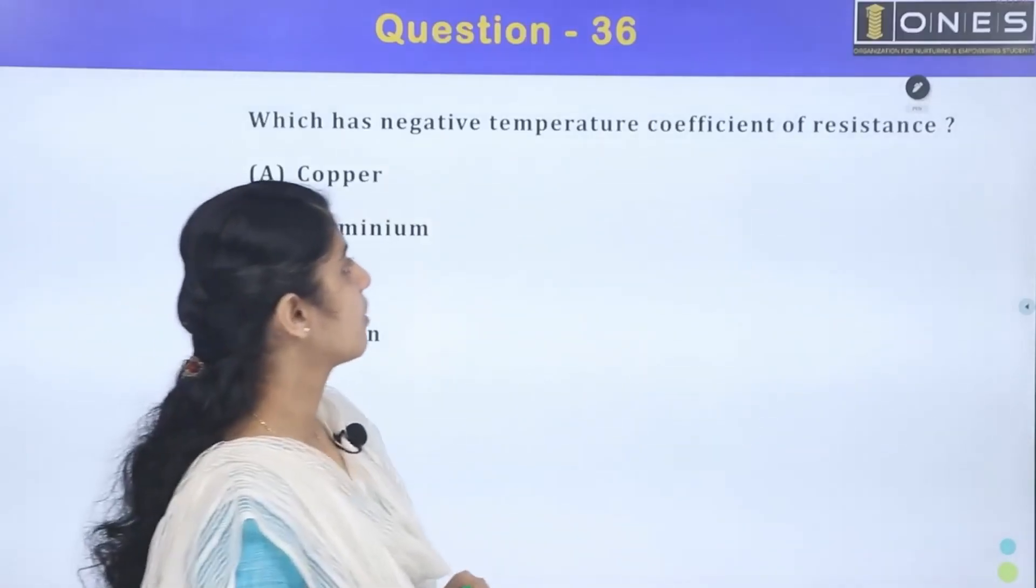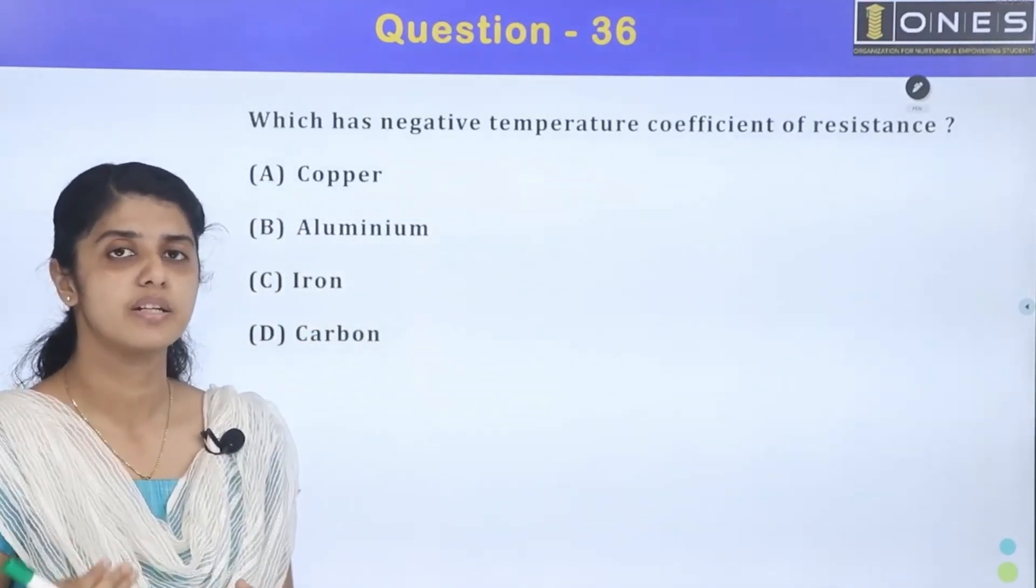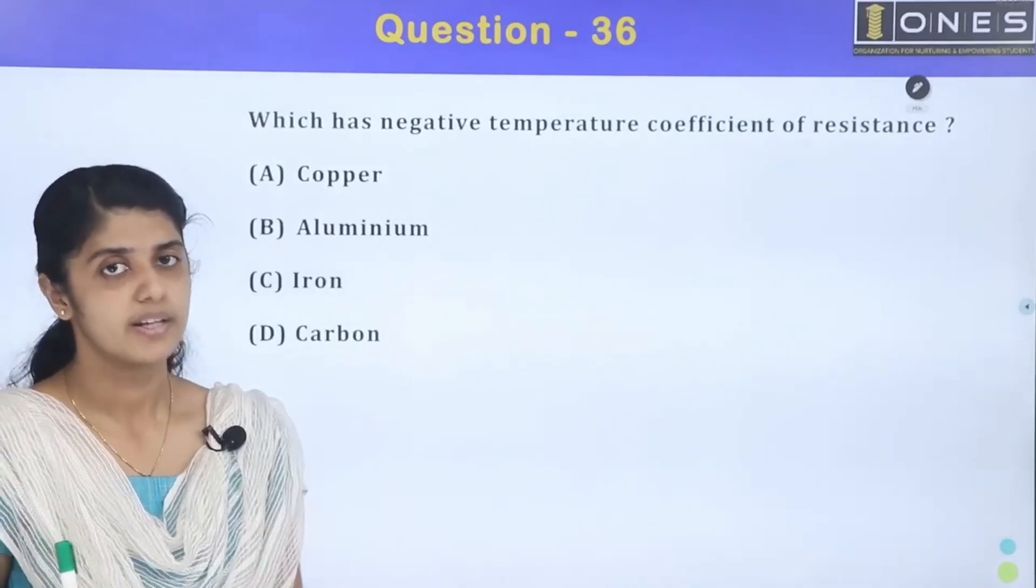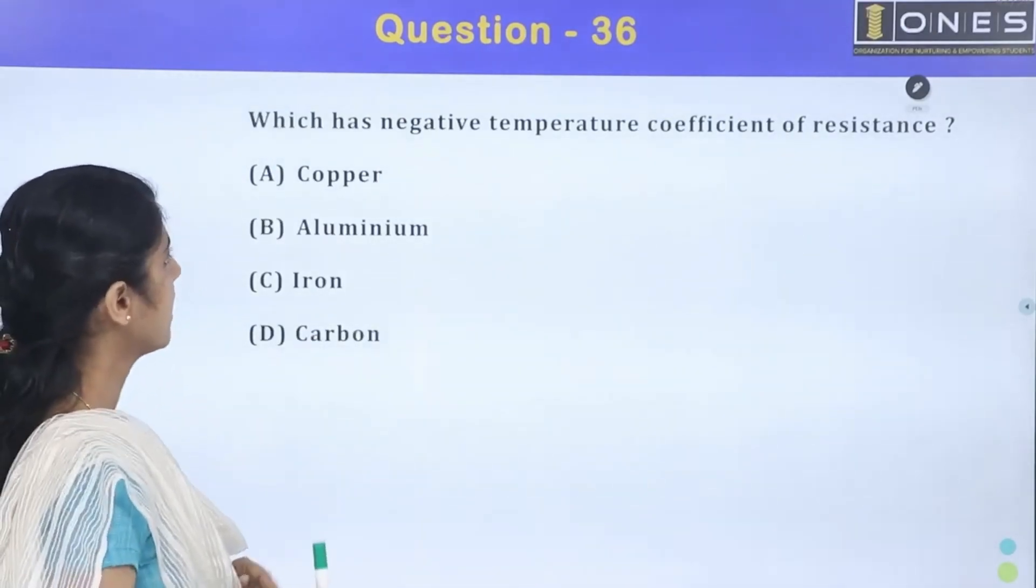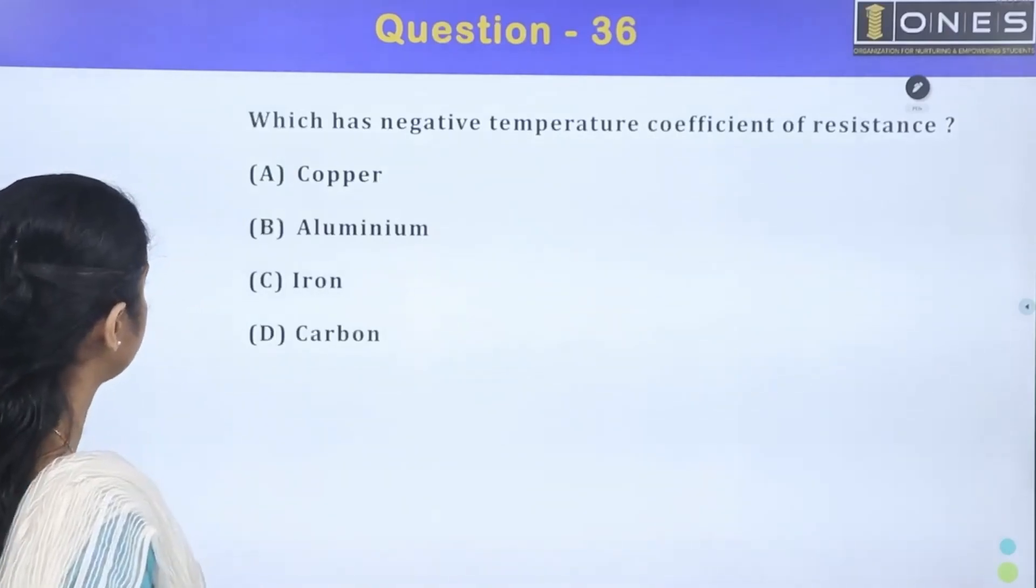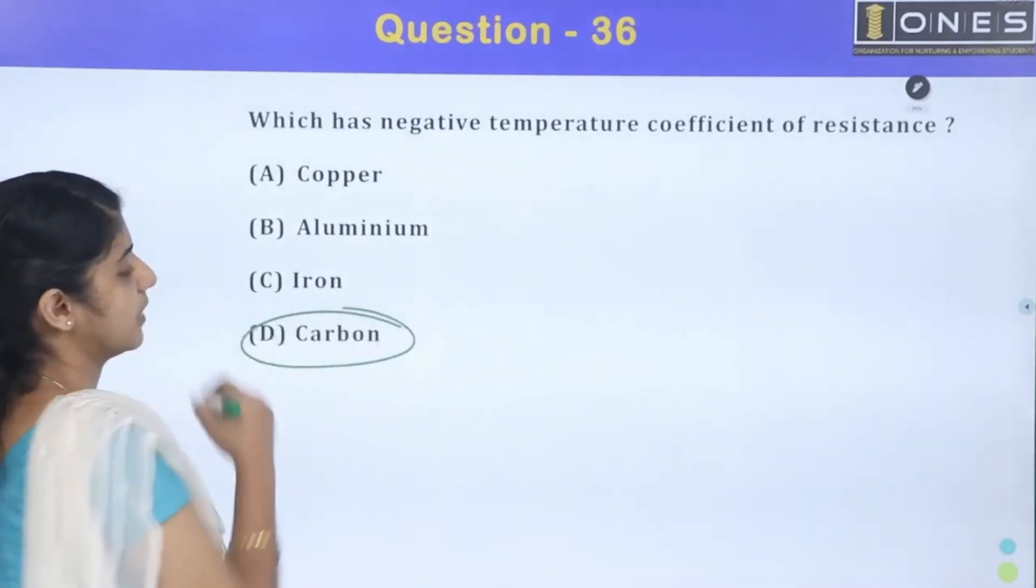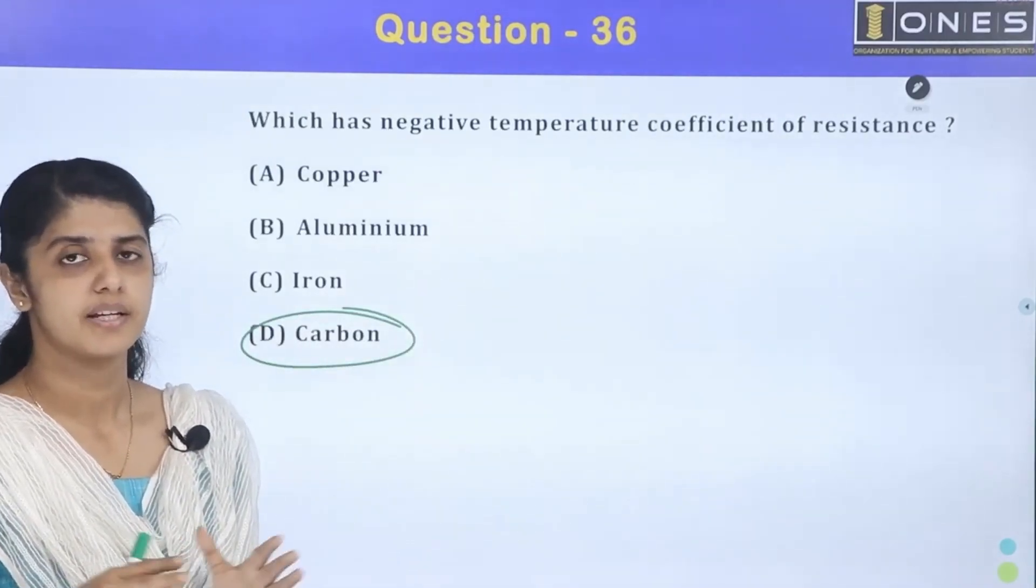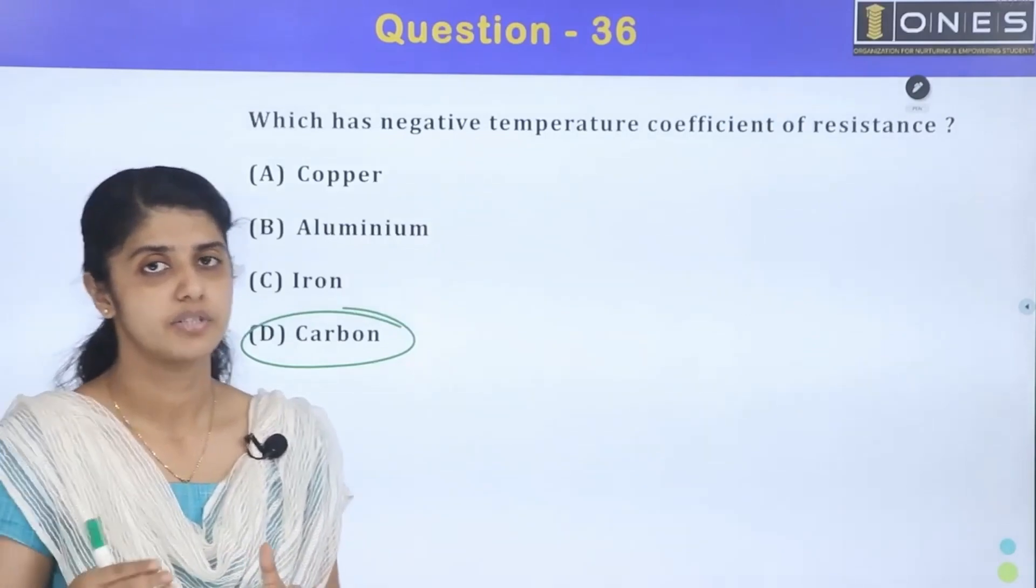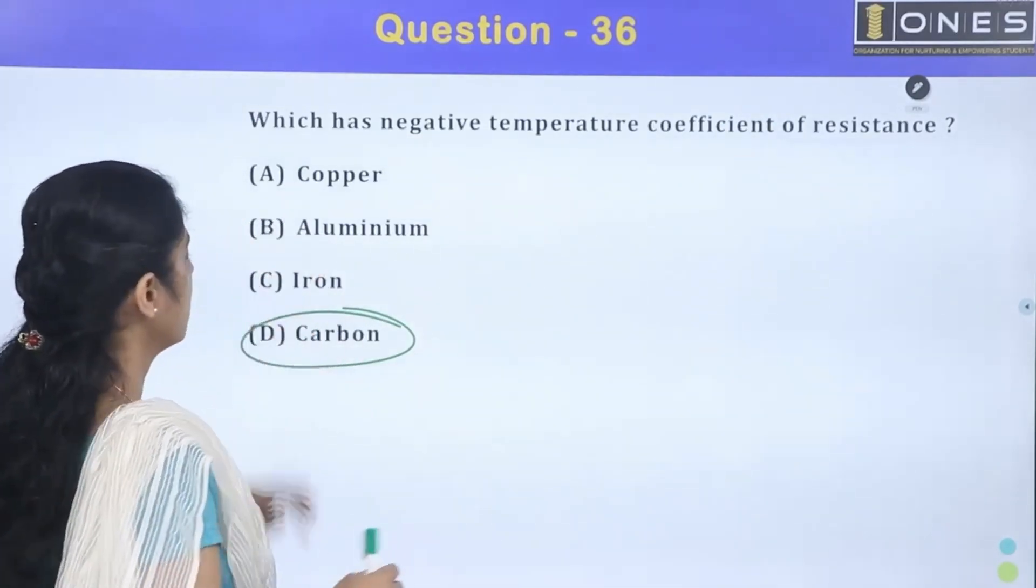Which has negative temperature coefficient of resistance? Negative temperature coefficient means as temperature increases, resistance decreases. The options are copper, aluminum, iron, and carbon. Semiconductors have negative temperature coefficient, while metals have positive temperature coefficient. The answer is carbon.